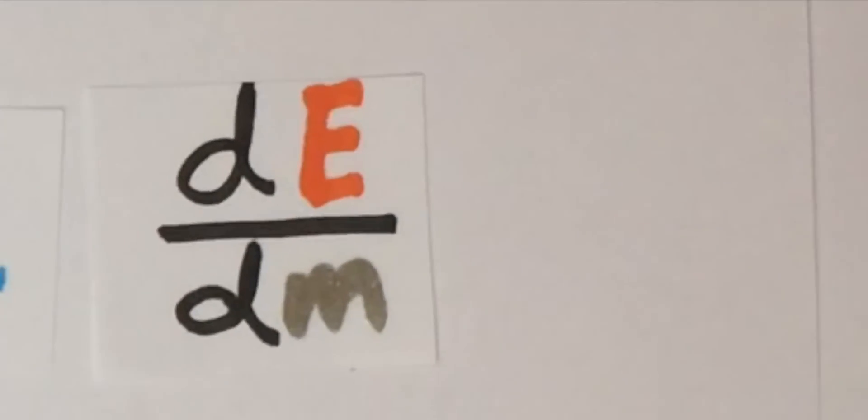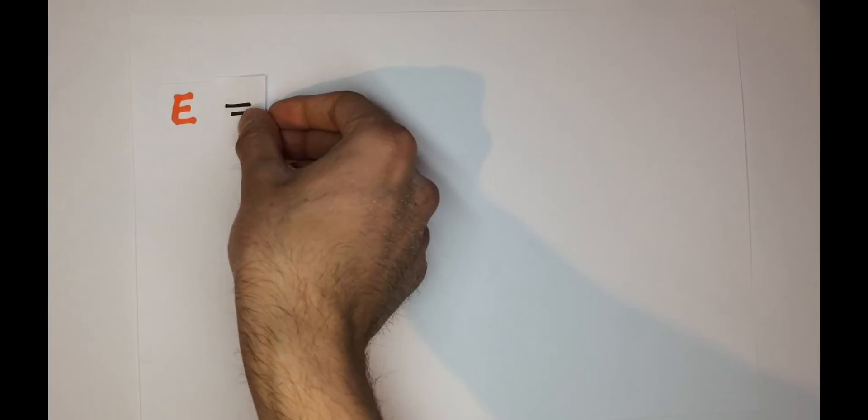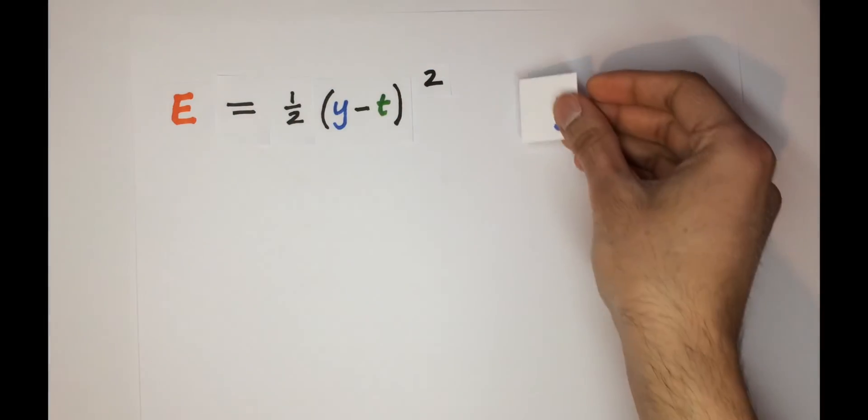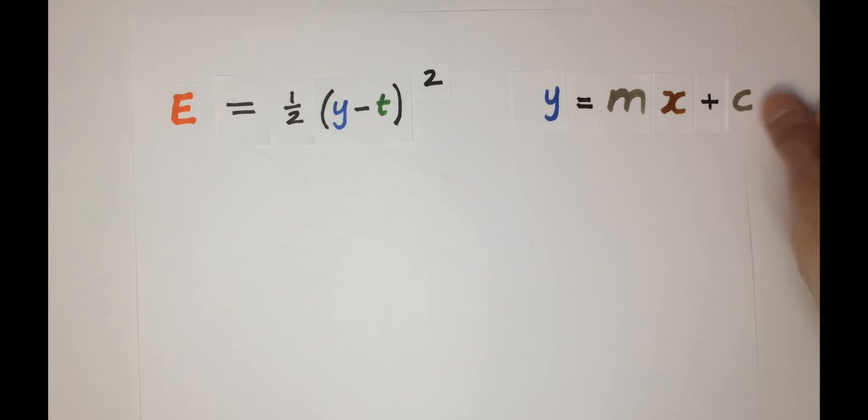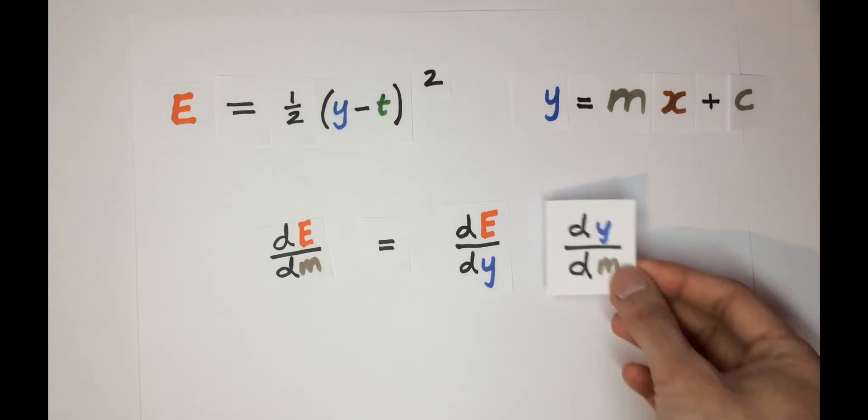But how do we find de on dm? It so happens that we can derive it from the error function using the chain rule. So we know that e equals a half times y minus t squared, and that y equals mx plus c. So we can find de on dm as de on dm equals de on dy times dy on dm.